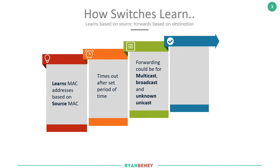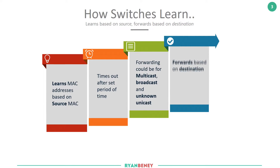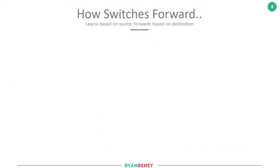When the switch forwards a frame, the frame could be a multicast, a broadcast, a unicast, or an unknown unicast. The type of forwarding matters because ultimately forwarding is based on the destination — whether it's multicast, broadcast, or unicast affects what the switch does with that frame when it's received.